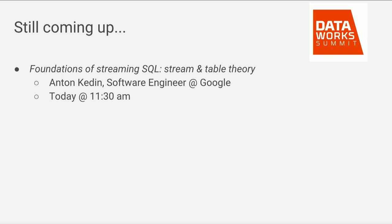Regarding a question about primitives and runners: in Beam we have a set of a few primitives like parallel do, group by key, and things like that. If you implement five, six, seven primitives you can run any pipeline. Then you have an understanding of more composite things — you can replace composites with your specific additional optimizations that you have beyond the primitives we require you to implement. By implementing primitives you can run anything, and then you can choose to replace some composites with optimizations specific to your engine.